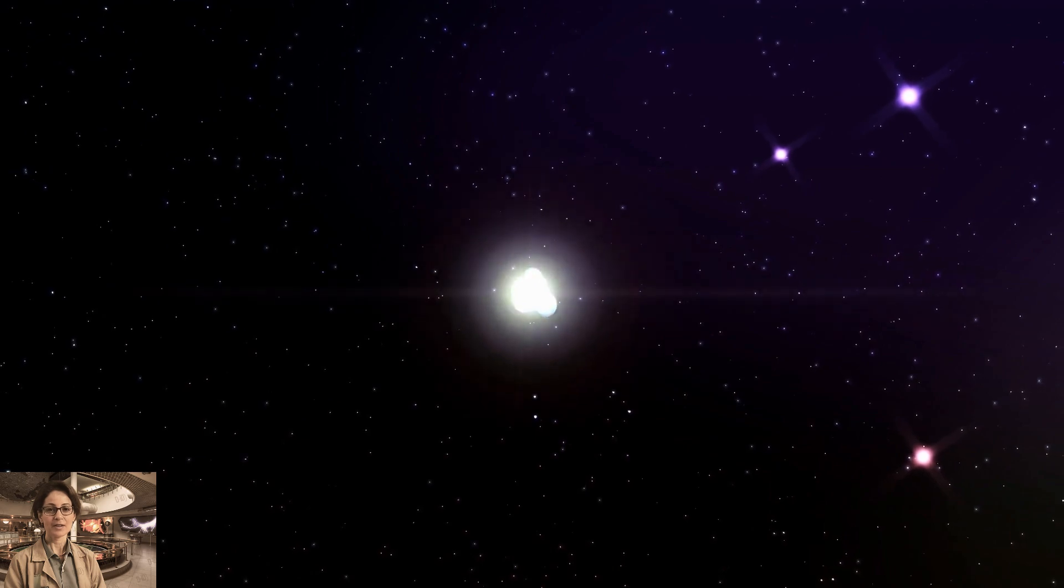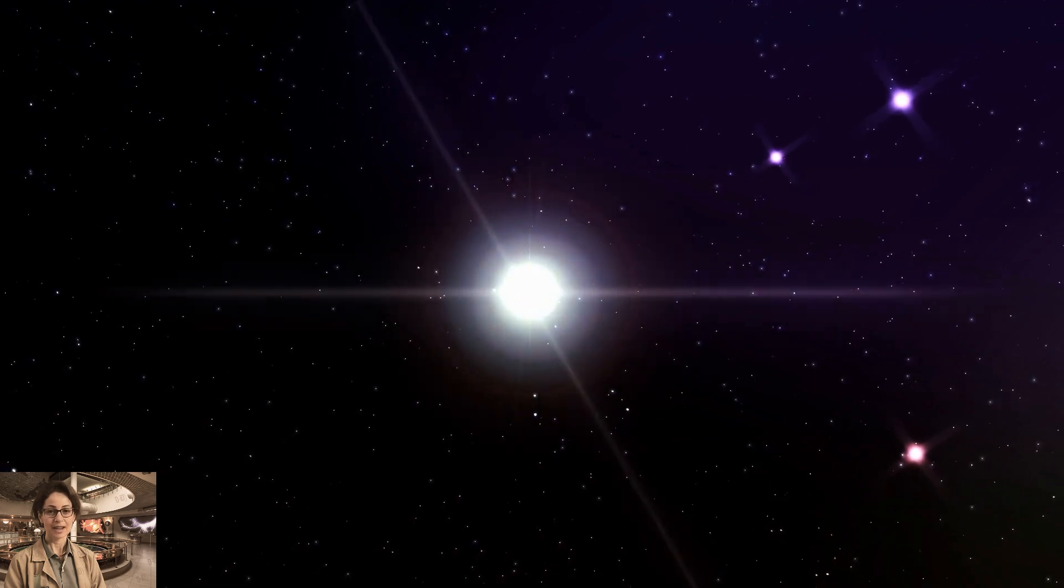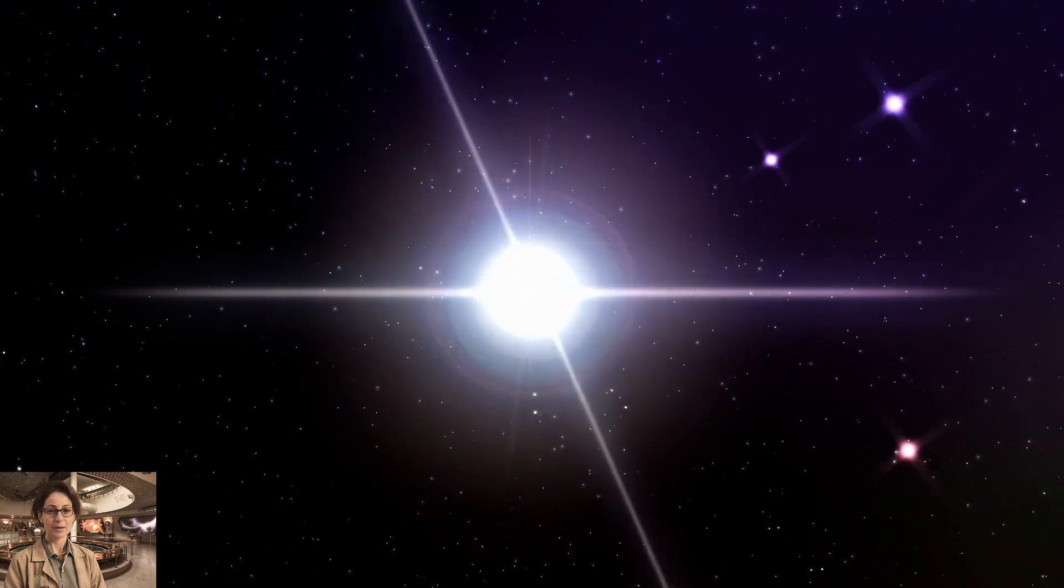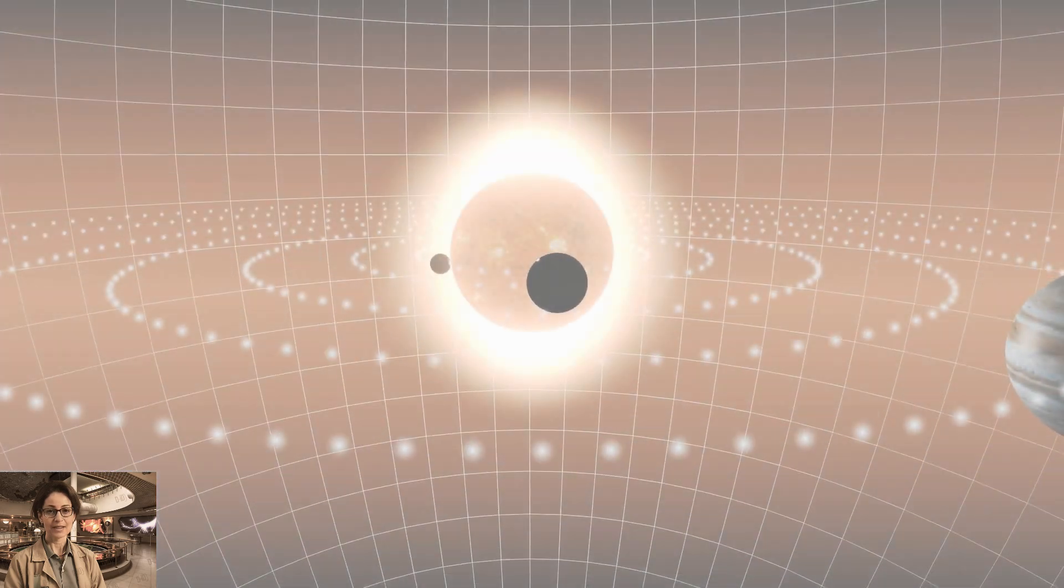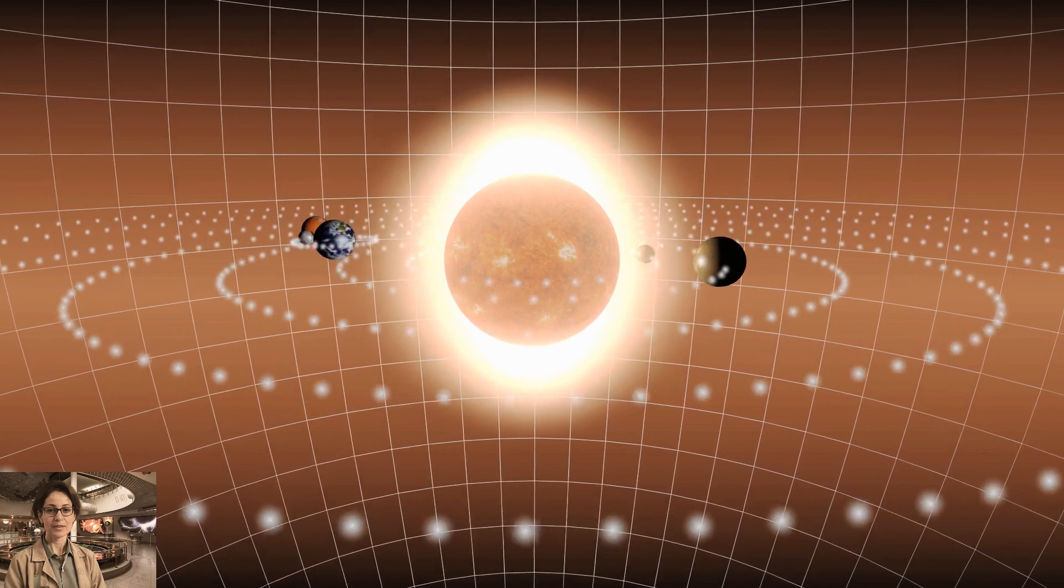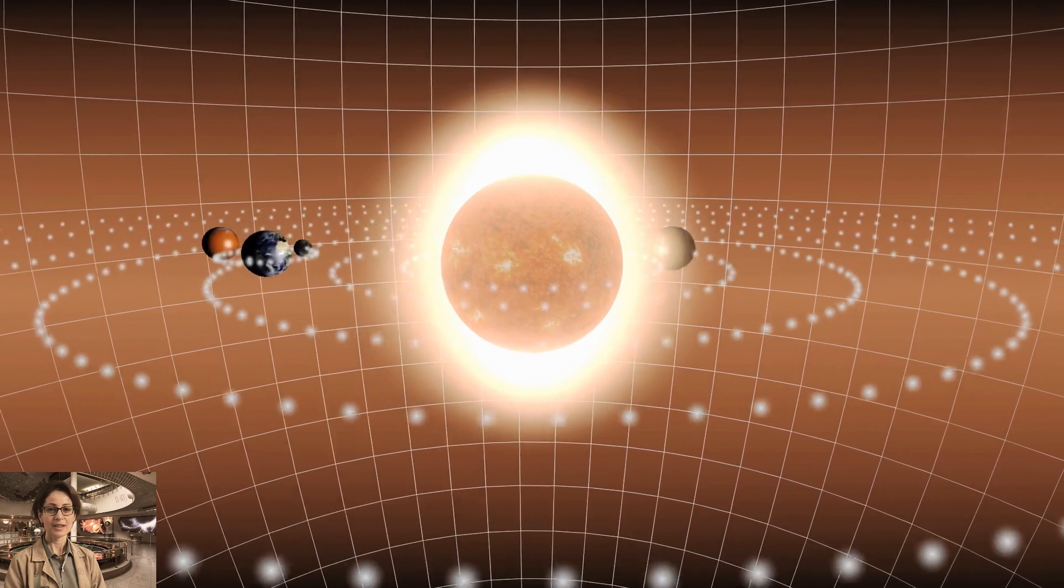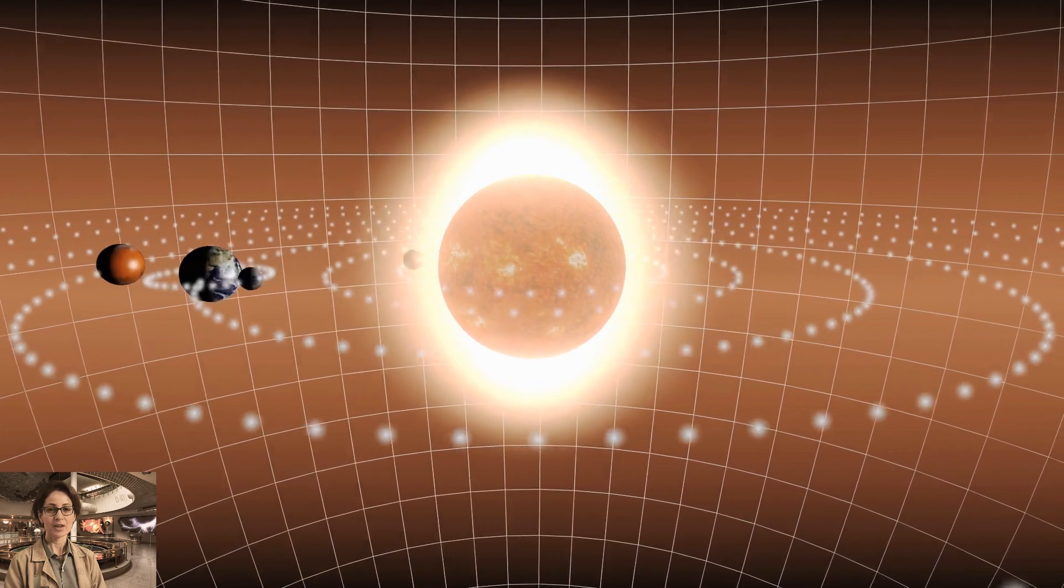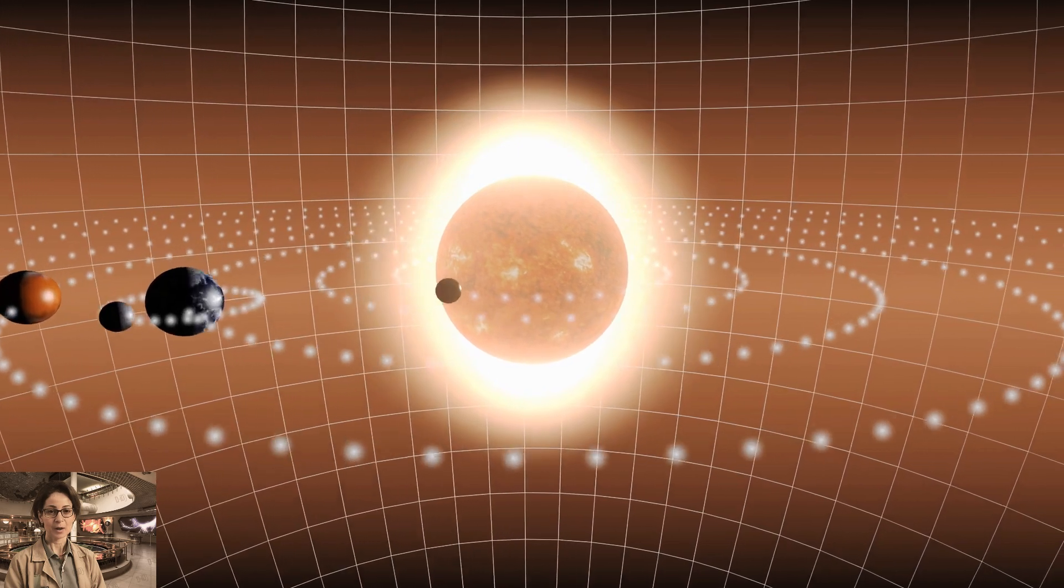One day, Olivia and her team discovered a distant star, Kepler-452, surrounded by an intriguing planetary system. Among them was an exoplanet, Kepler-452b, situated in the star's habitable zone, a potential cosmic abode for life as we know it.